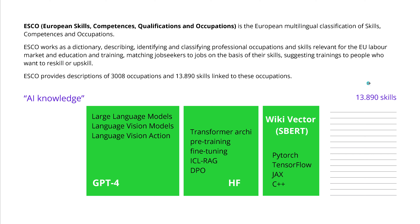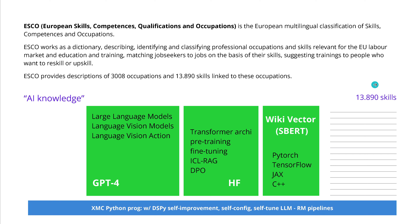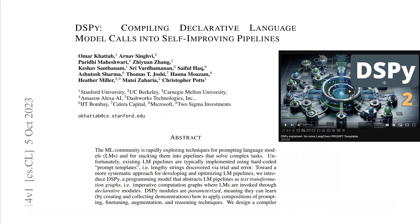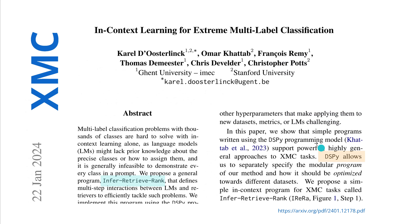You could do this with LangChain manually with manually-found prompt templates, or you could say let's do this with a Python program — an XMC Python program — with a DSPy self-improvement, self-configuration, and self-tuning language model retriever model pipeline that automates the job. Let's do this with DSPy.